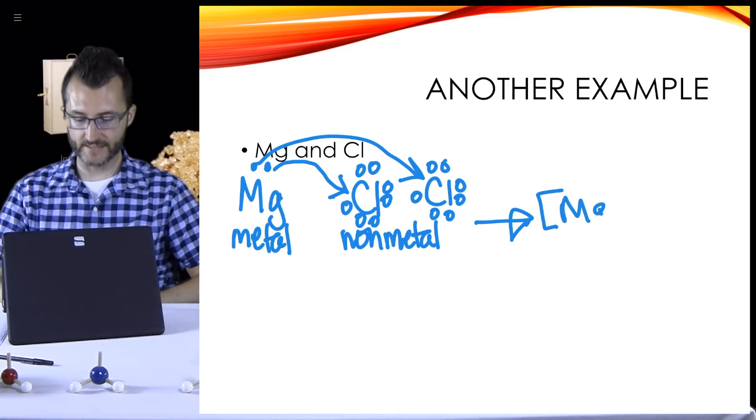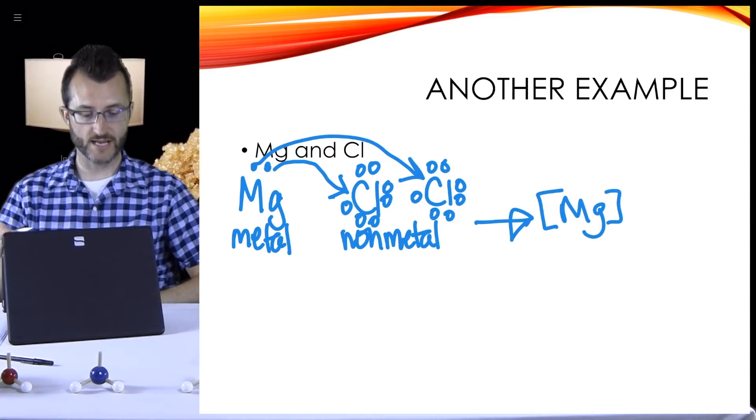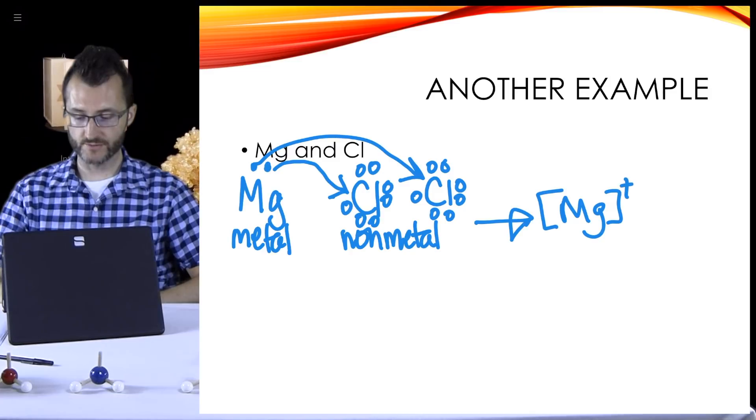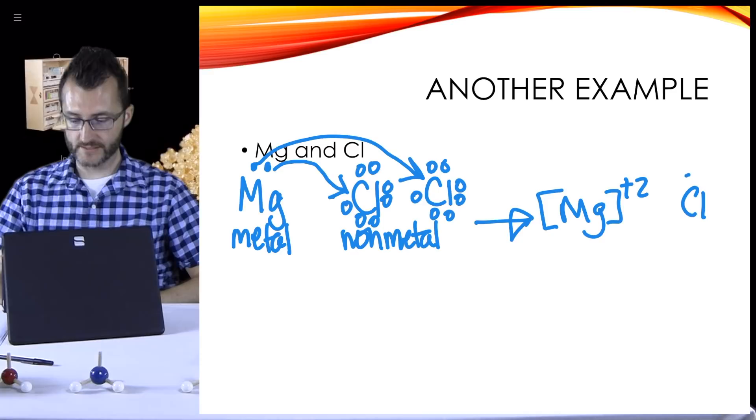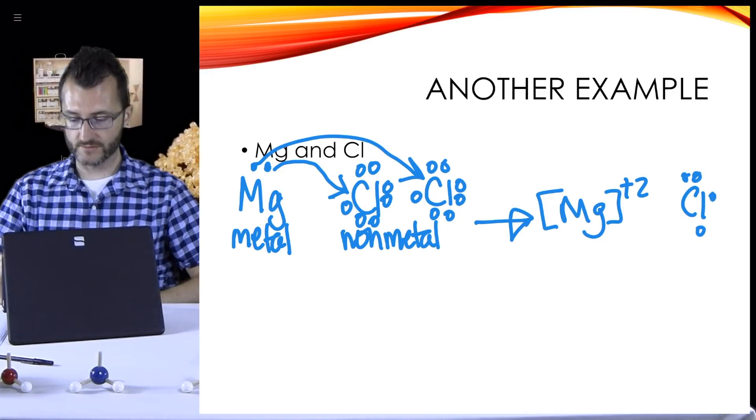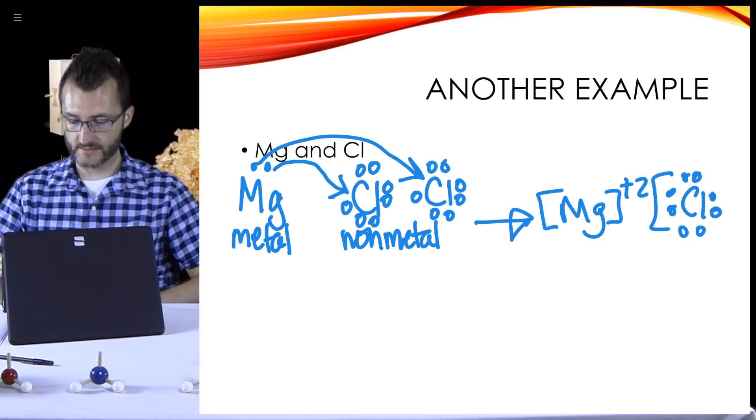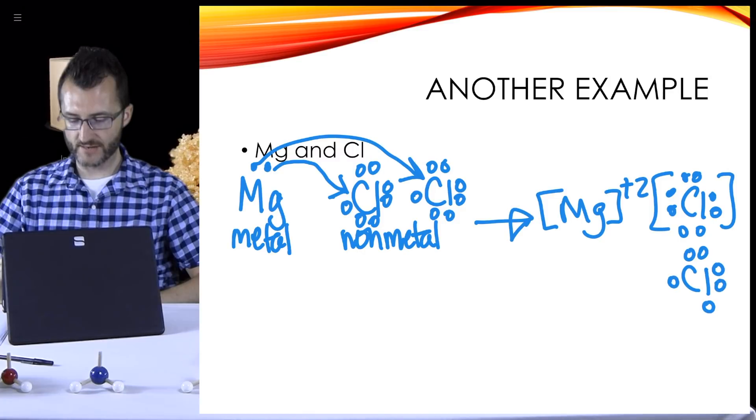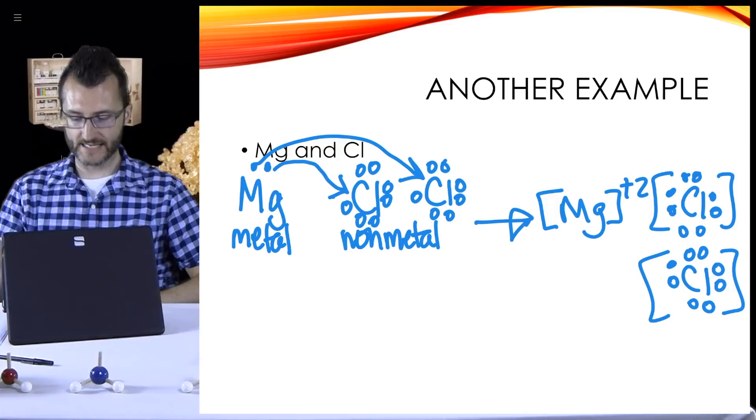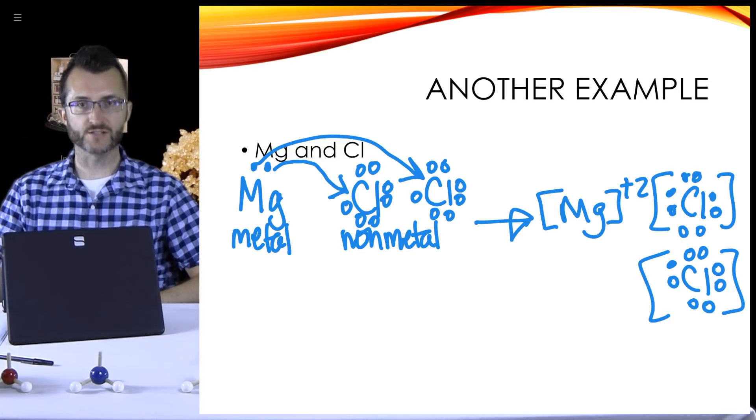I think we have our transfer set, right? Because magnesium is losing all of it and chlorine is gaining to get full outer shells. So let's draw these with the brackets and charges. So Mg in brackets, it lost two electrons. So we'll have a plus two charge. Very good. And then I have two chlorines that I have to draw out.